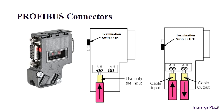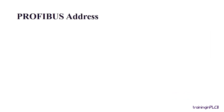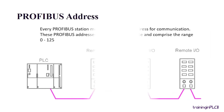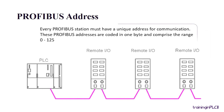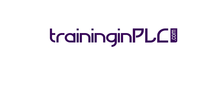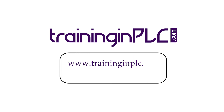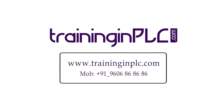Every PROFIBUS station must have a unique address for communication. These PROFIBUS addresses are coded in one byte and comprise the range 0 to 125. For more informative technical videos and training on industrial automation, visit our webpage at www.traininginplc.com.